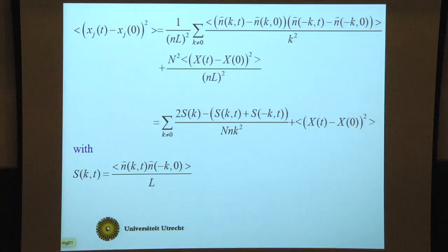You can rewrite this in terms of dynamic and static structure functions. Define S(k,t) as the expectation value of n(k,t) times n(-k,0). You get equal time correlation functions plus the term from the center of mass displacement.